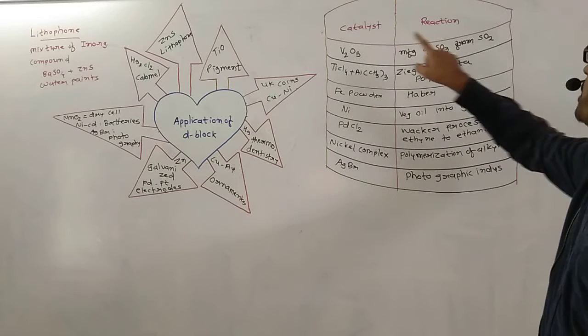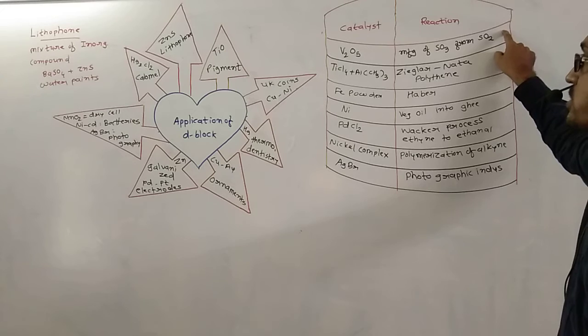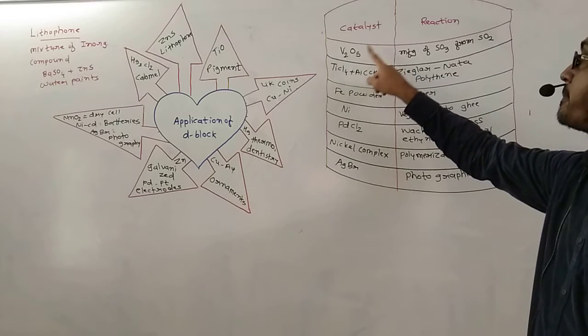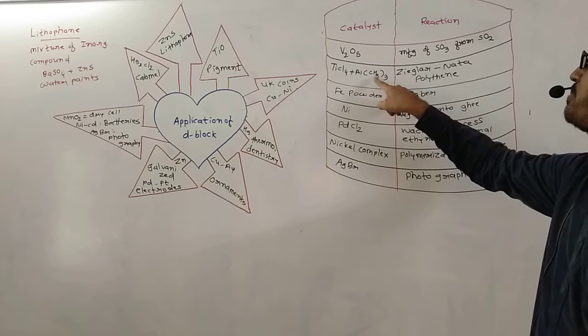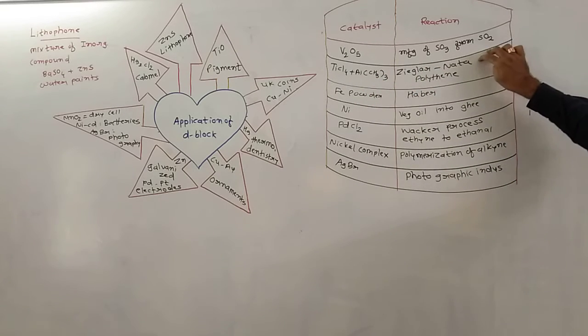Vanadium pentoxide, V2O5, is used for the manufacture of sulfur trioxide from sulfur dioxide. Titanium tetrachloride and tri-methyl-aluminium, this catalyst is known as Ziegler-Nata catalyst.